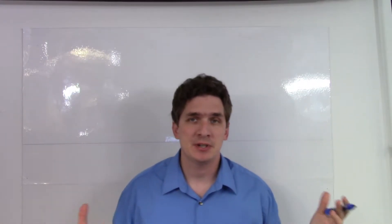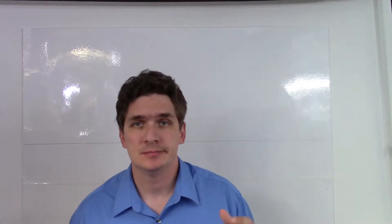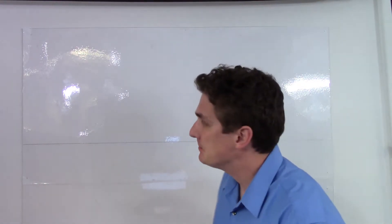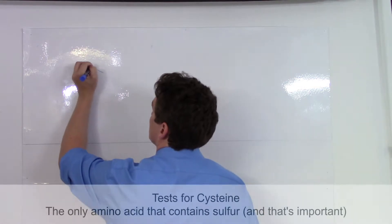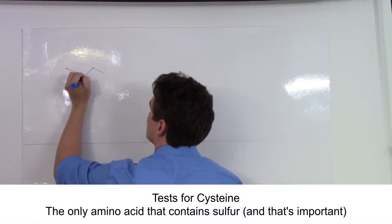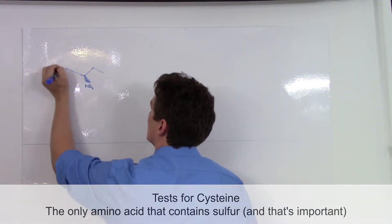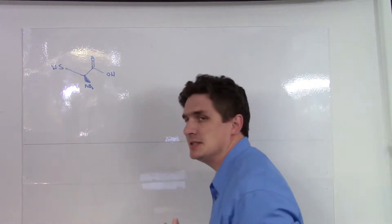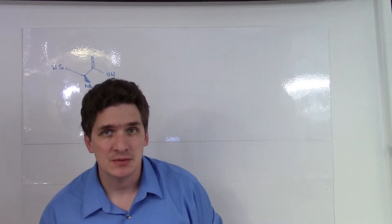The next two reactions I'm going to group together. They are two different reactions but they test for the same thing: the presence of cysteine. Cysteine is an amino acid, and it's the only one here that actually contains sulfur. There are two tests for it.